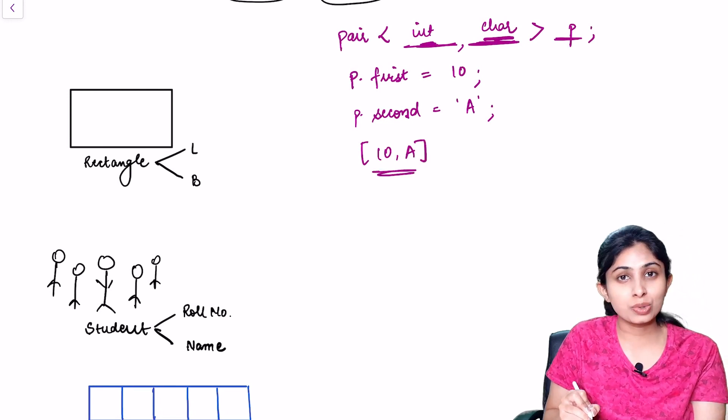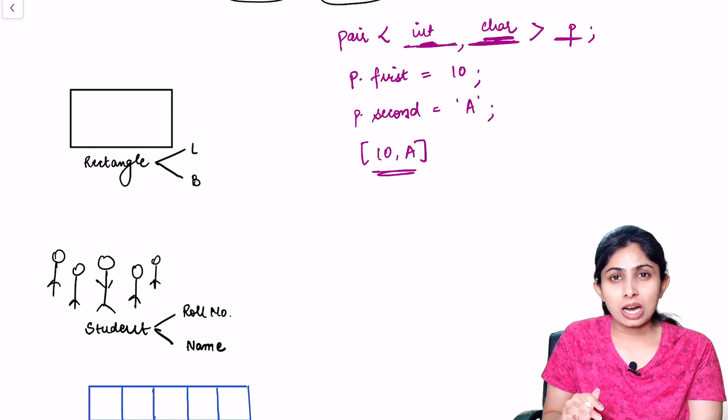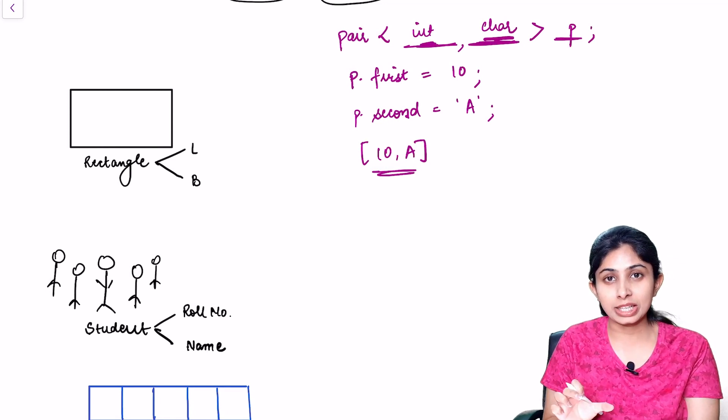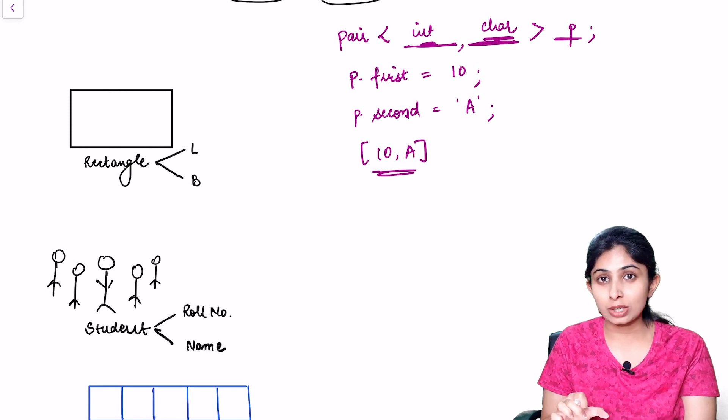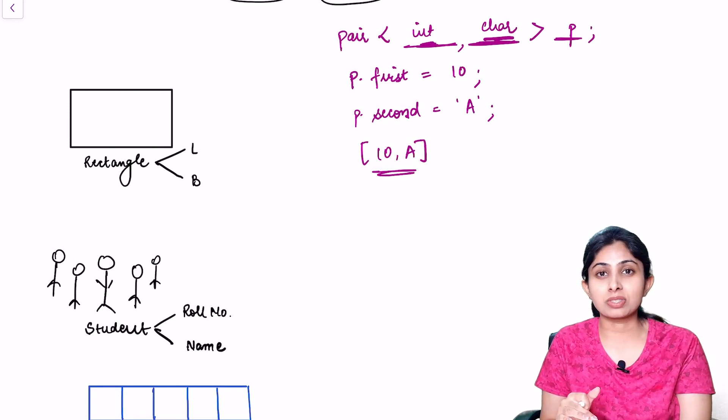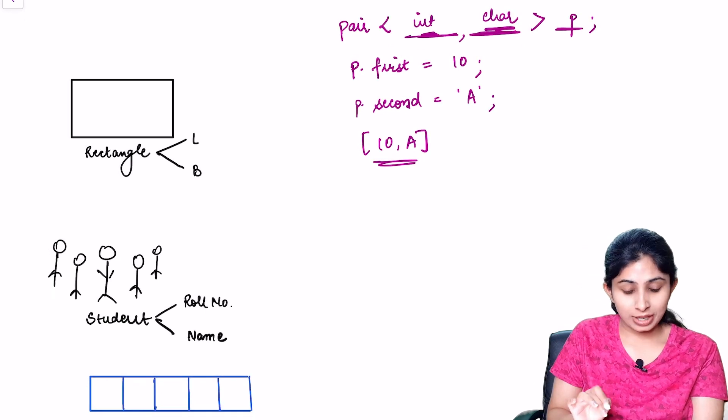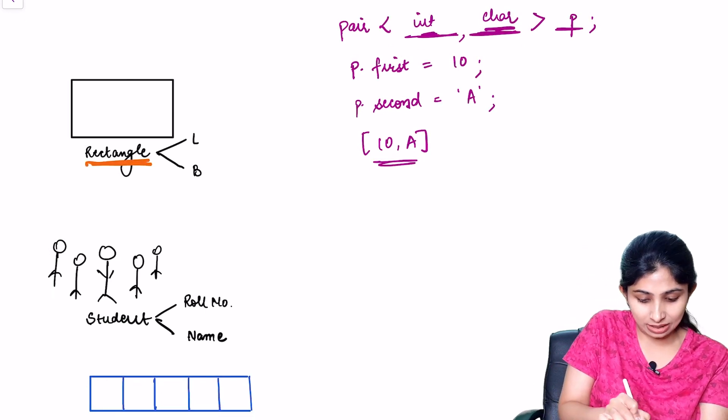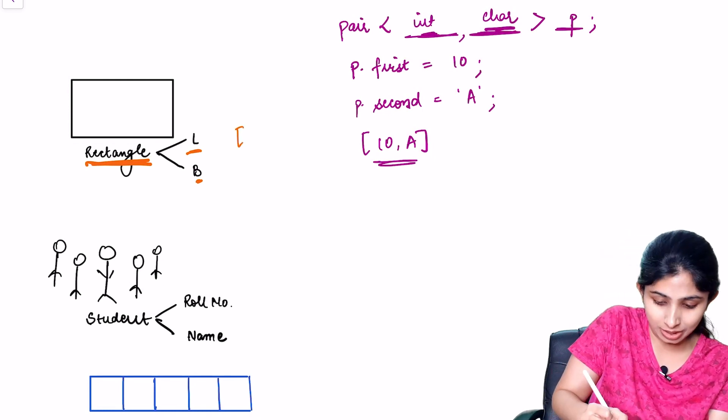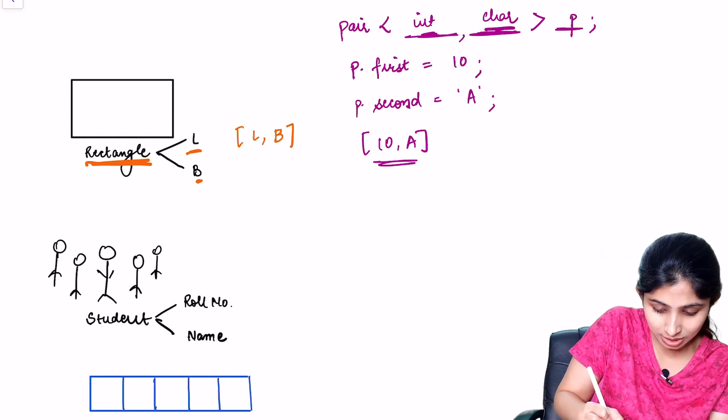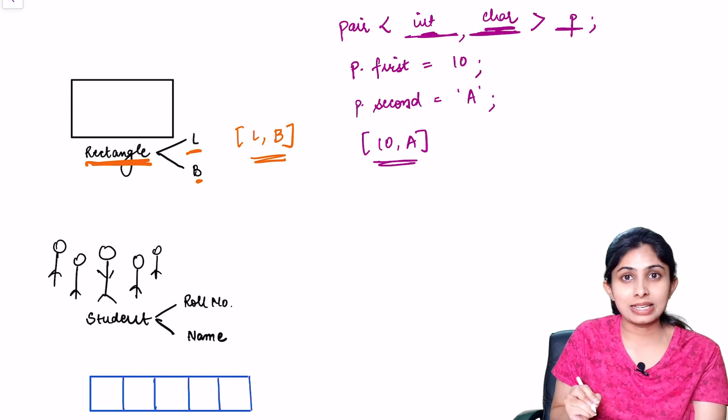Now let's understand the use of pair. Basically a pair couples two different data objects into a single object if those two different data objects are associated or connected in some manner. For example, let's assume a rectangle which has a length and a breadth. So we can create a pair which can store the length and breadth into a single data object.